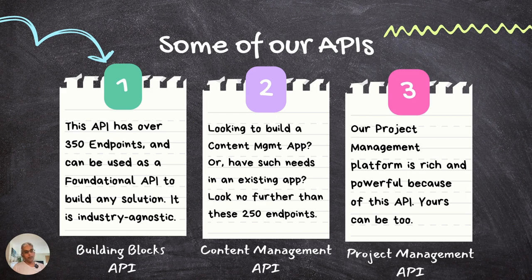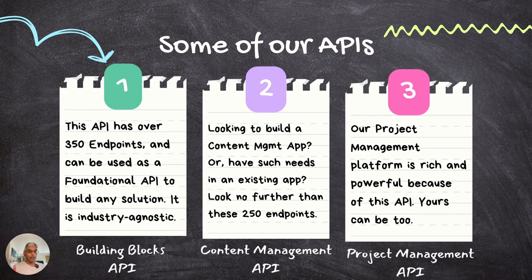The next one is the Content Management API. If you're building a content management solution, or a solution that has content management needs in terms of managing content in a hierarchy with multiple levels, linking content with symbolic links, managing access with granular access control, adding favorites, getting notifications, and many more features — you can look at the Content Management API for those needs. You can start with one API and add the rest to make a more robust integration, or use them independently or collectively.